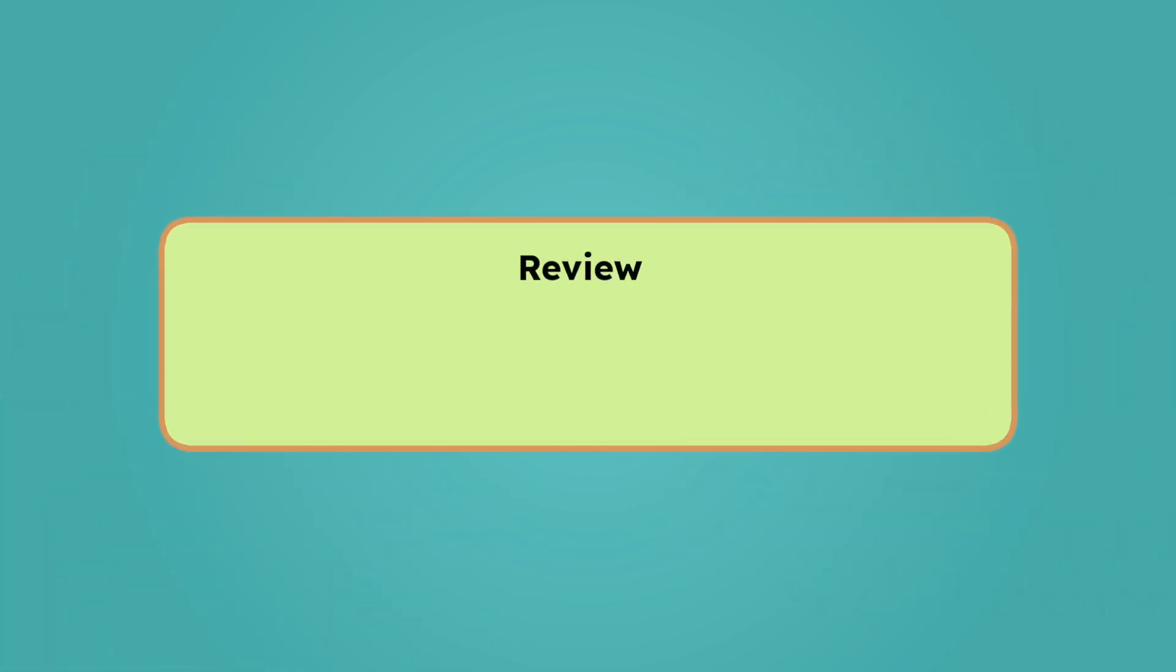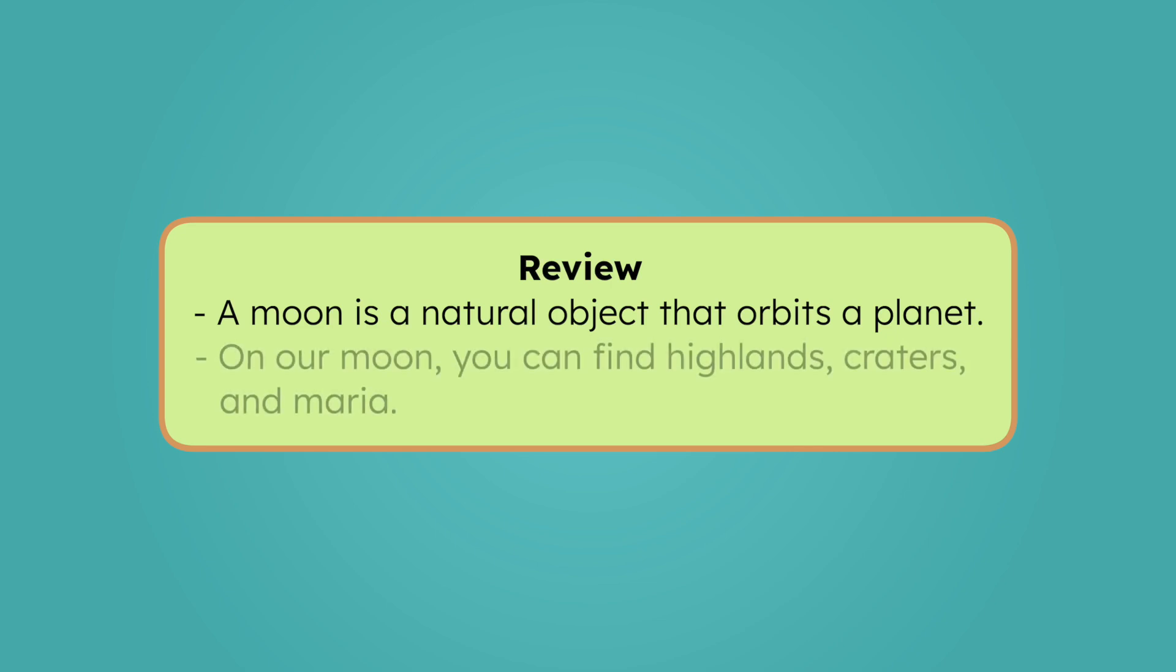Let's review everything we've learned today. We learned that a moon is a natural object that orbits a planet. Our moon orbits Earth, and it's one of the easiest things to spot in the night sky. We then talked about three of our moon's coolest features. The highlands, the craters, and the maria.